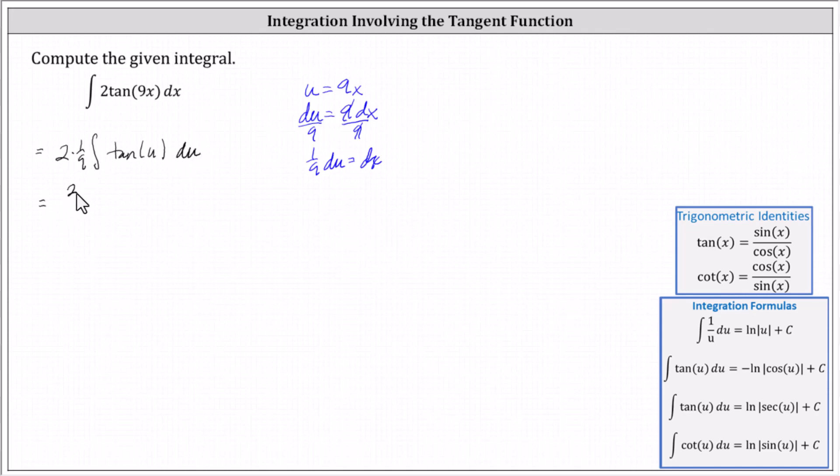Simplifying, we have two ninths times integral of tangent u du. Integrating first with respect to u, we have two ninths times negative natural log absolute value of cosine u plus c, or negative two ninths natural log absolute value of cosine u plus c.